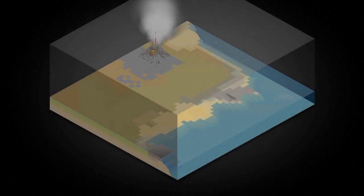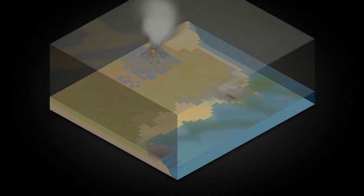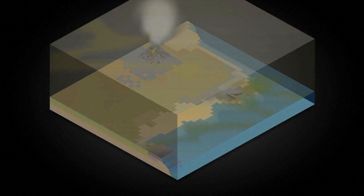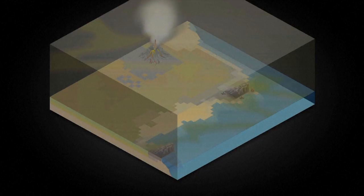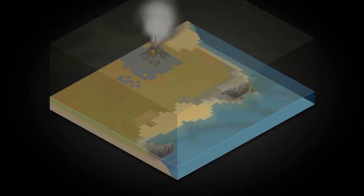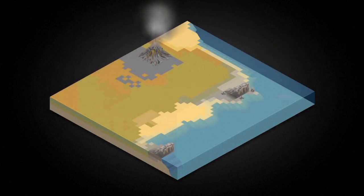The carbon cycle began with volcanic eruptions which propelled carbon dioxide to the surface of the Earth several billion years ago. The Earth's primeval atmosphere was mainly composed of carbon dioxide or CO2.